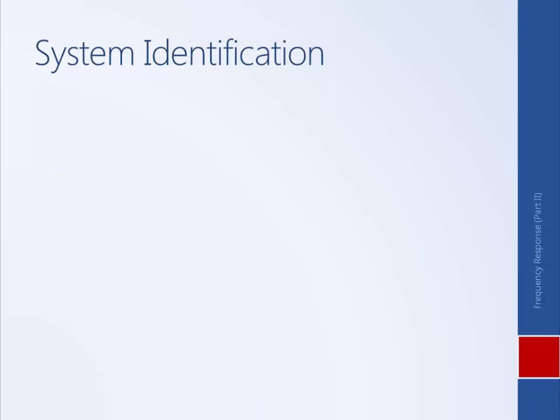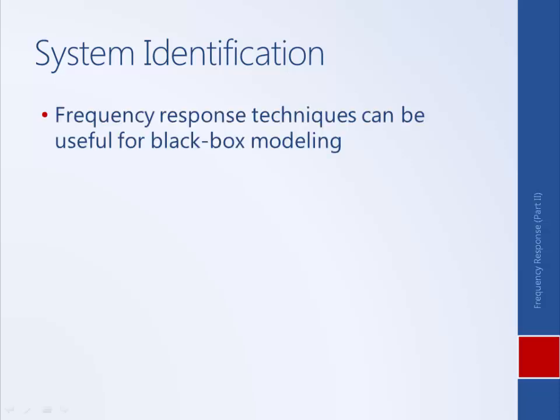Another thing that frequency response is very good for, in addition to analysis of relative stability, is system identification — black box modeling for trying to back out models of a system without performing any sort of first-principles-based analysis, just by feeding the system inputs and looking at the outputs, empirically determining a model.